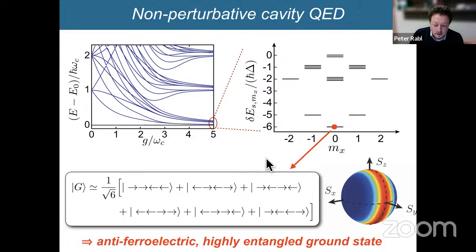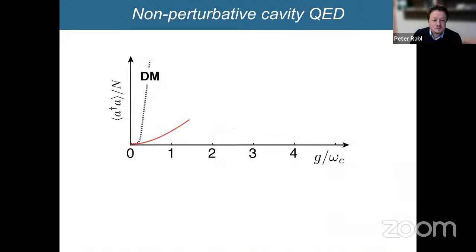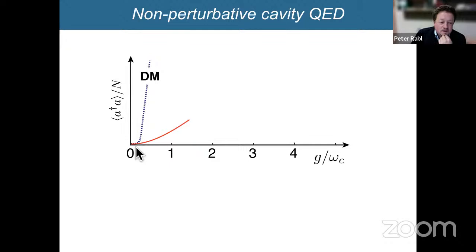Looking at the field configuration: plotting the ground-state photon number ⟨A†A⟩ as a function of coupling strength, and comparing with the Dicke model prediction — which would show a superradiant phase transition with the photon number diverging — the correct full model behaves very differently. At this stage the Dicke model would predict the system to explode with many photons, showing the superradiant instability.